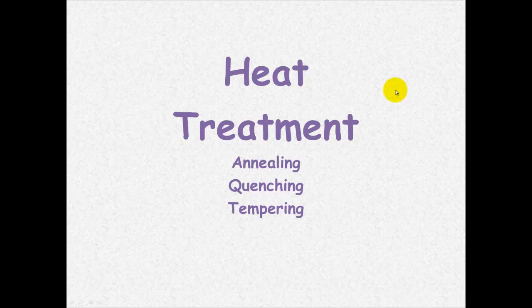Heat treatment. Three types of heat treatment can also affect the crystal structure in a metal. And these are annealing, quenching, or tempering. I'm going to discuss each of those.